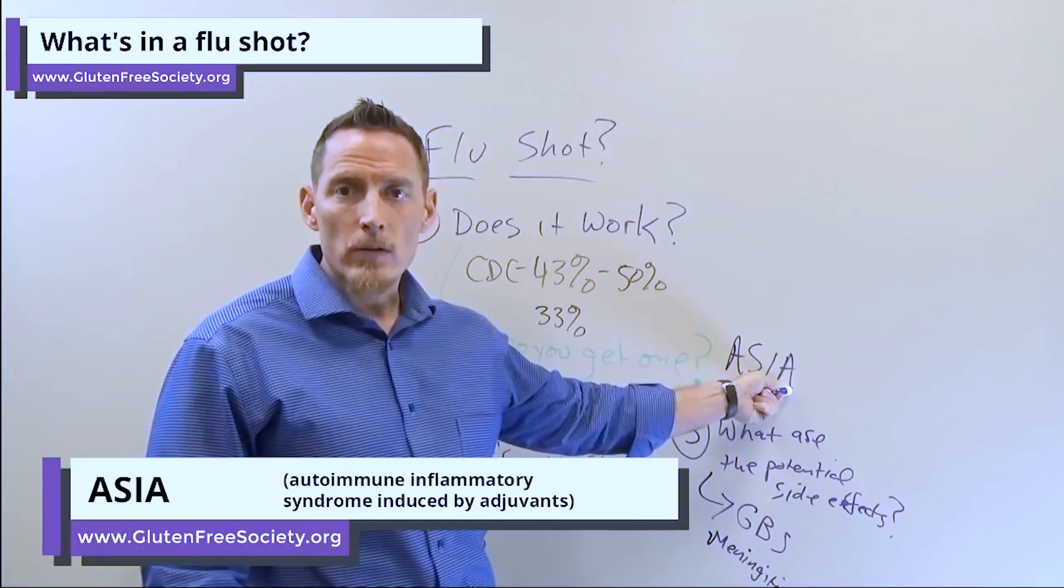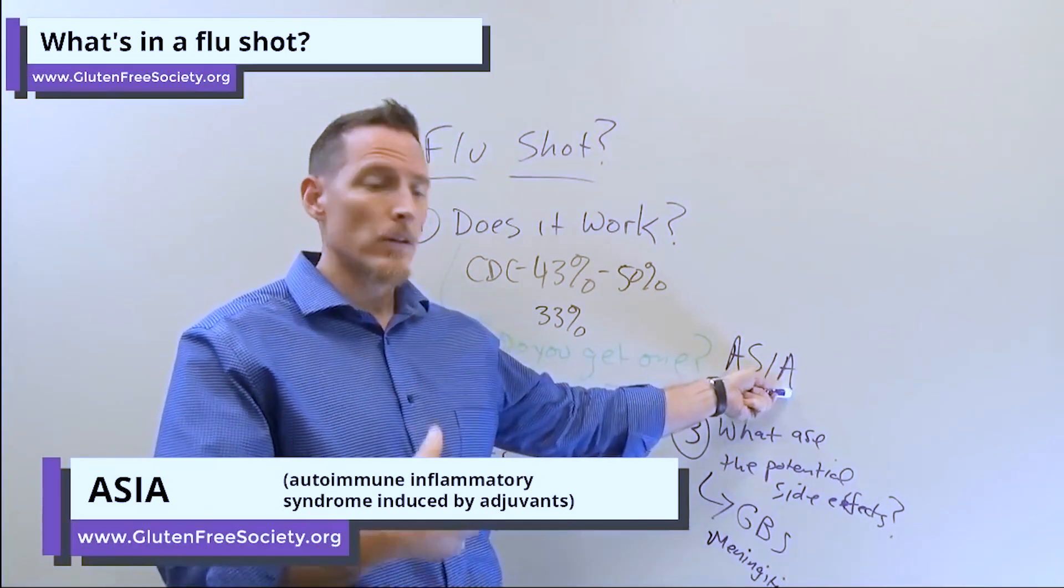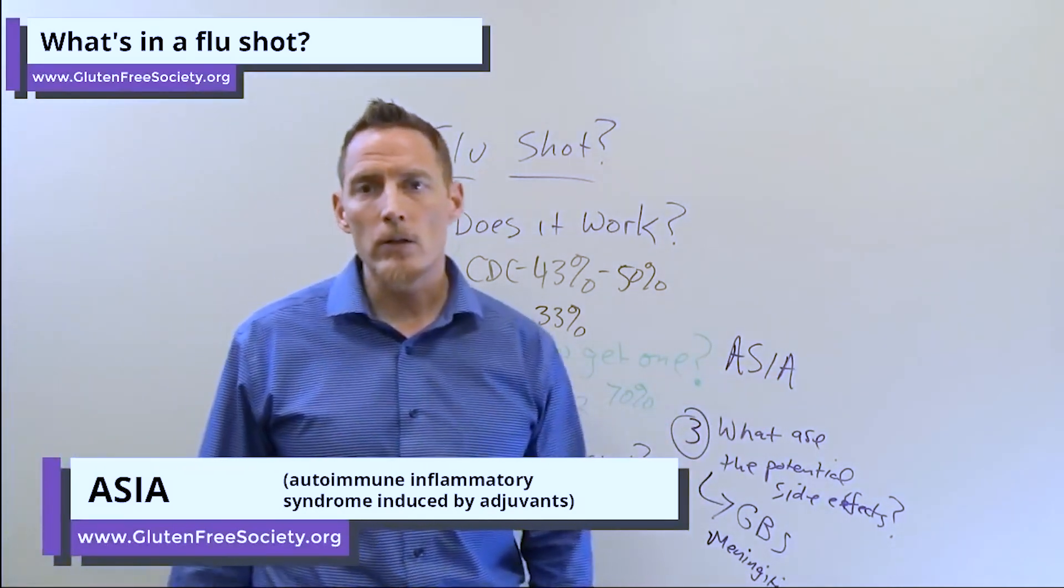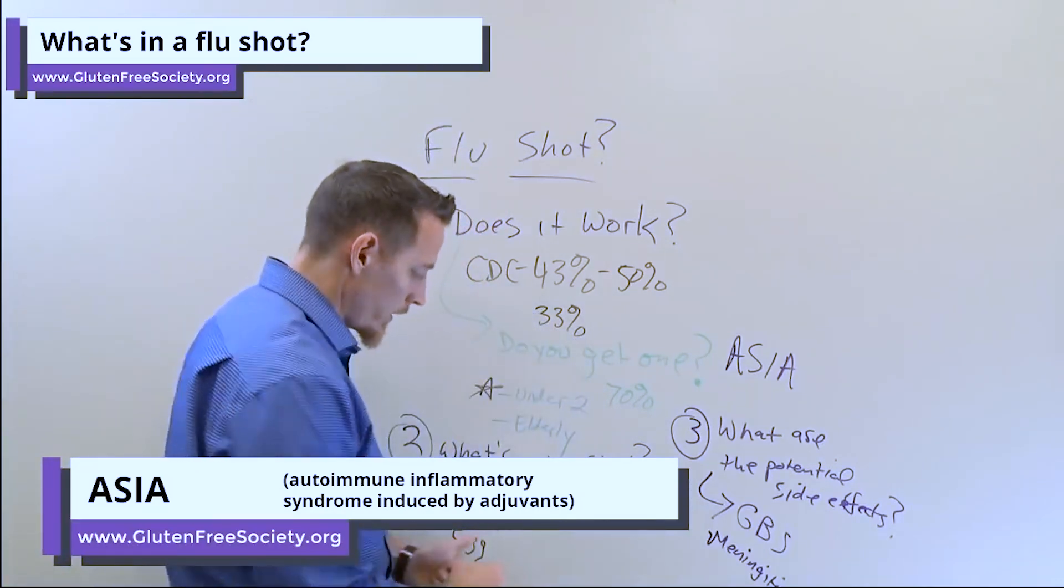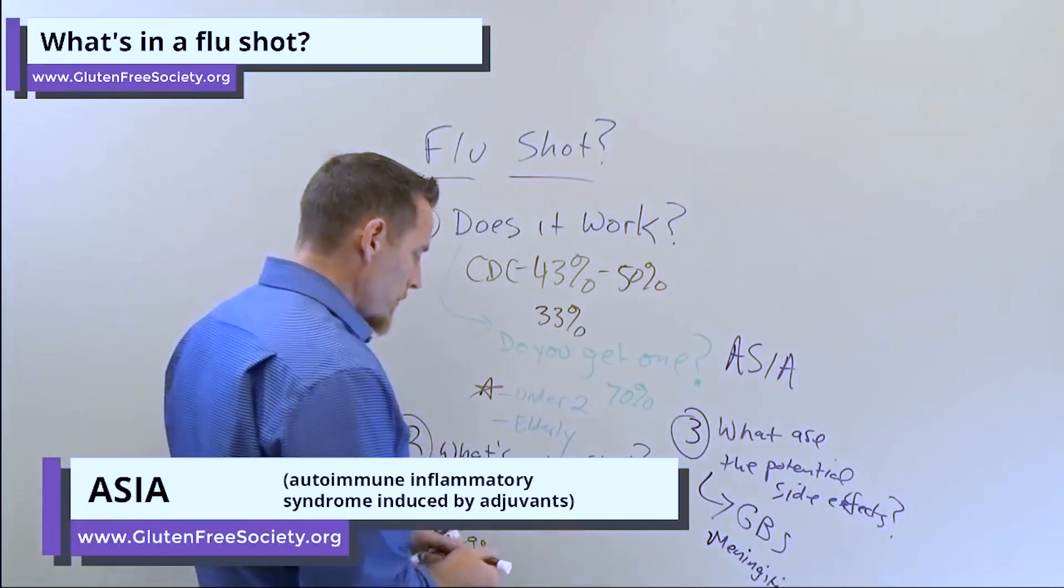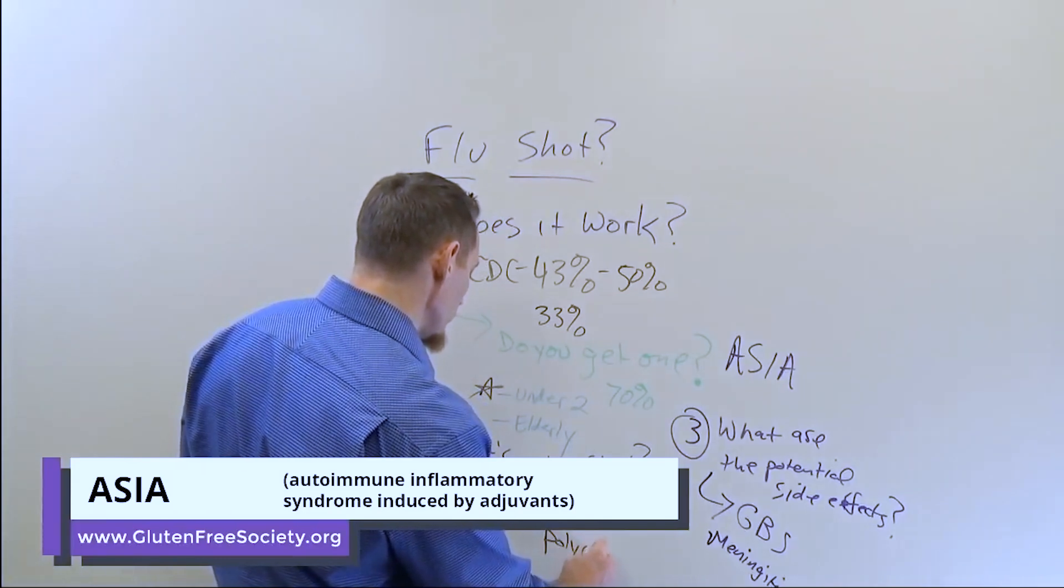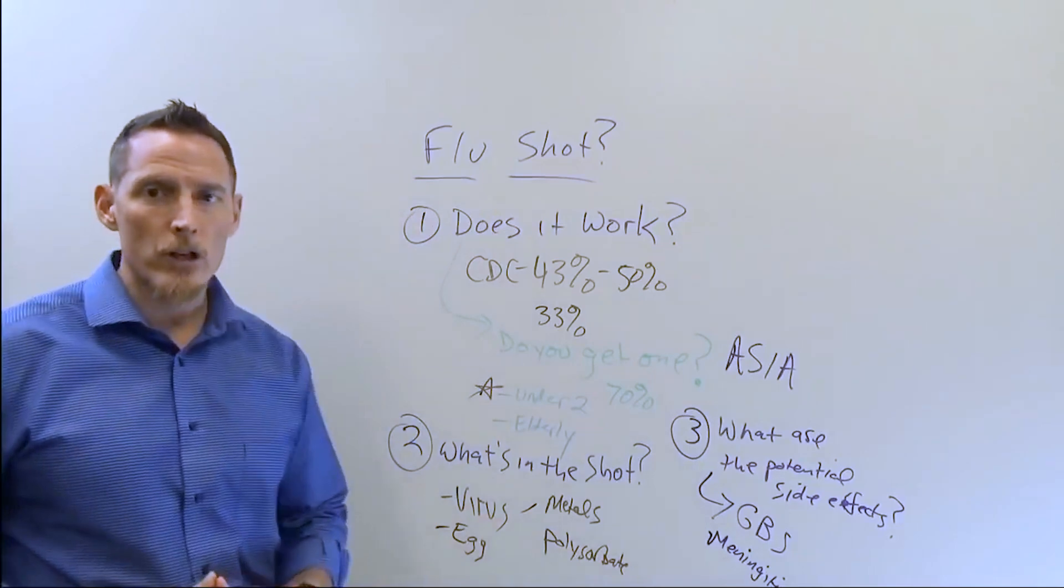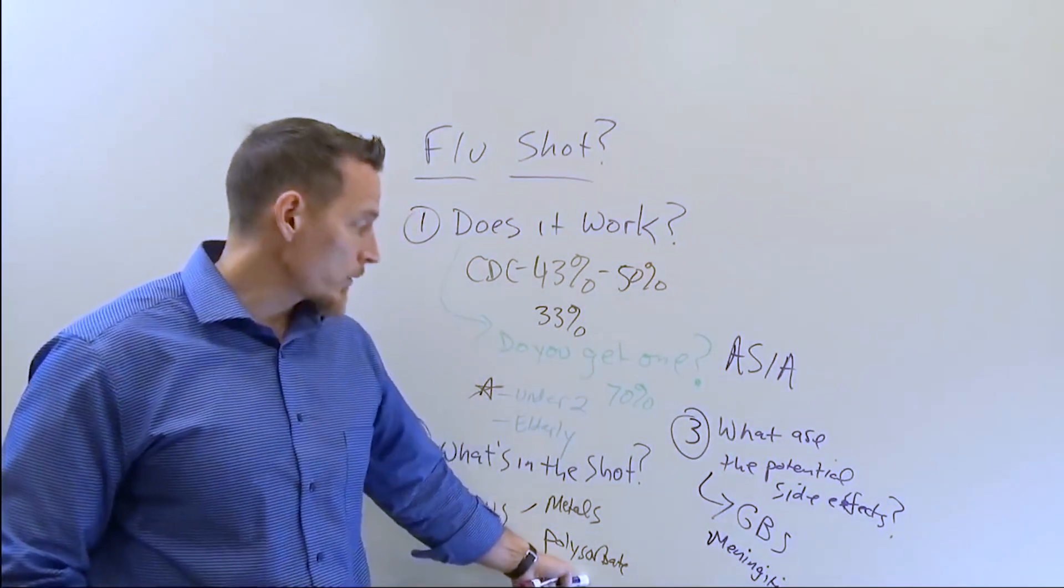ASIA is an acronym that stands for autoimmune inflammatory syndrome induced by adjuvants. Adjuvants are the substances in the vaccine that are not the virus, the other substances in the vaccine. The metals are adjuvants, the egg is adjuvant, the polysorbate is an adjuvant, which is by the way another one of the ingredients down here that we could add to our list of vaccine-based ingredients.